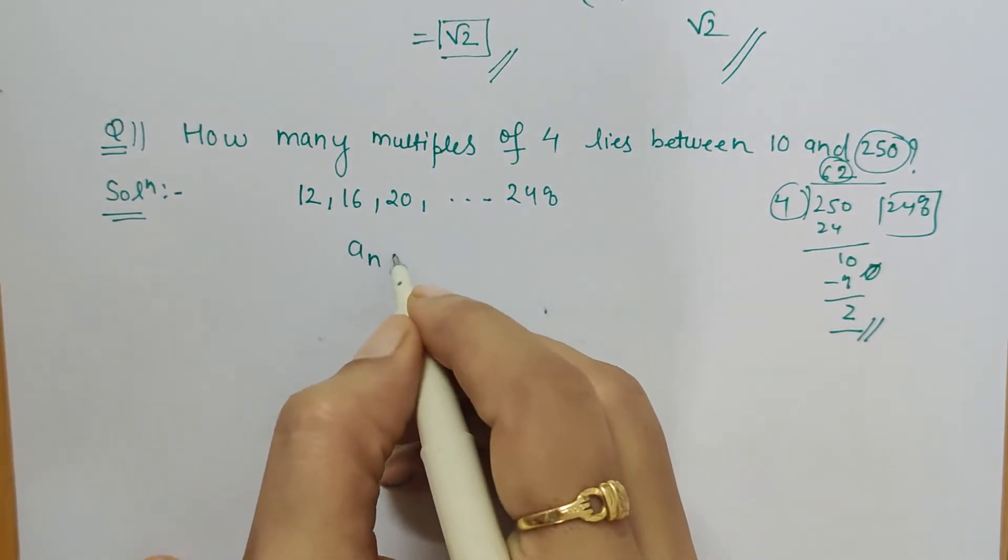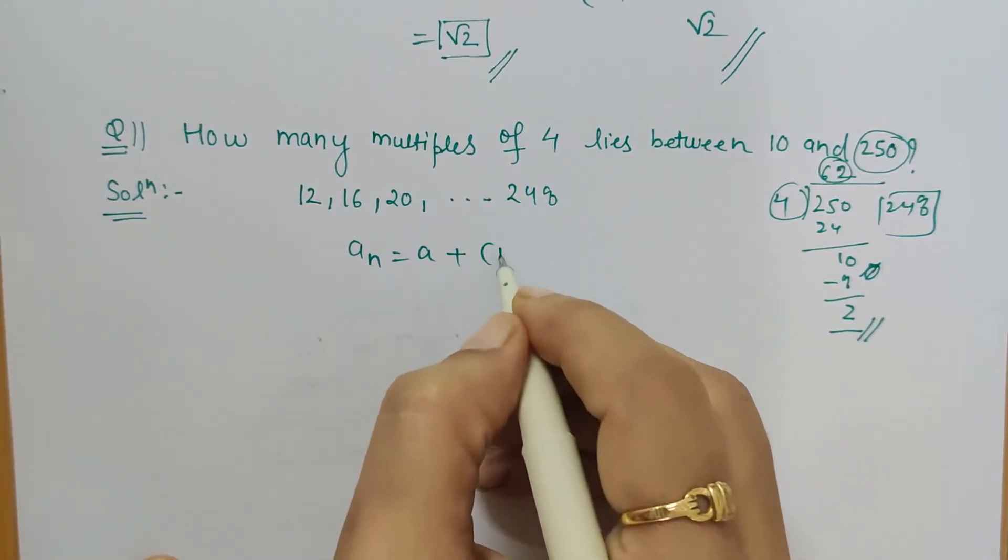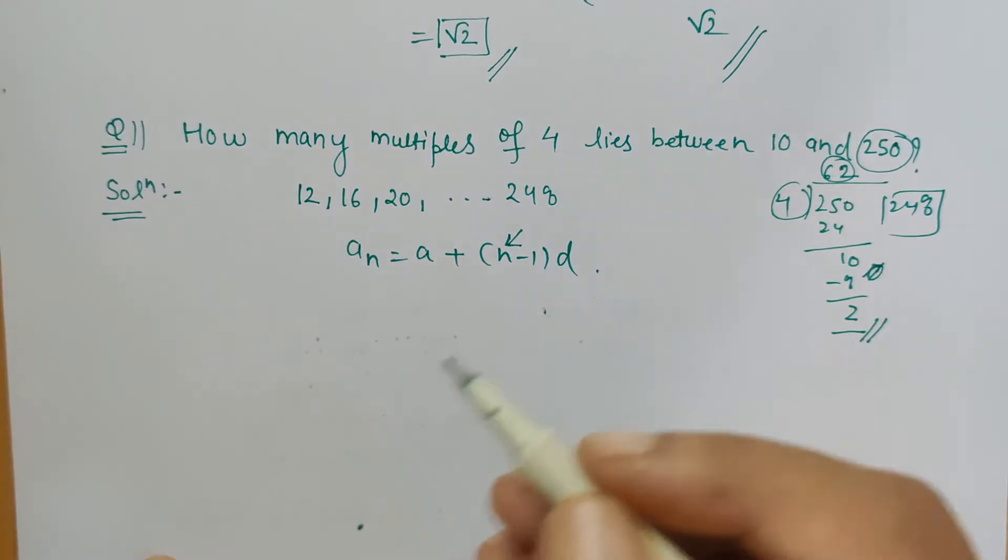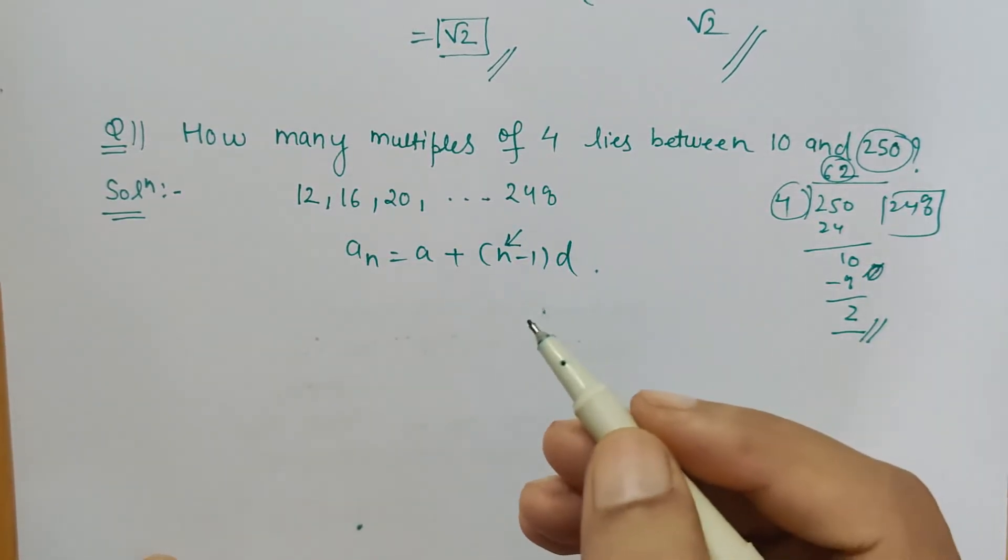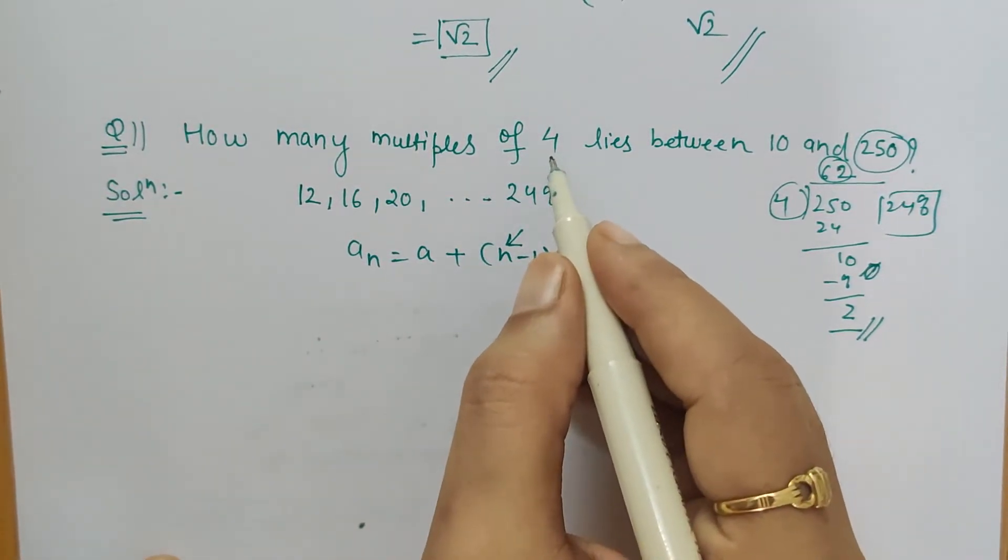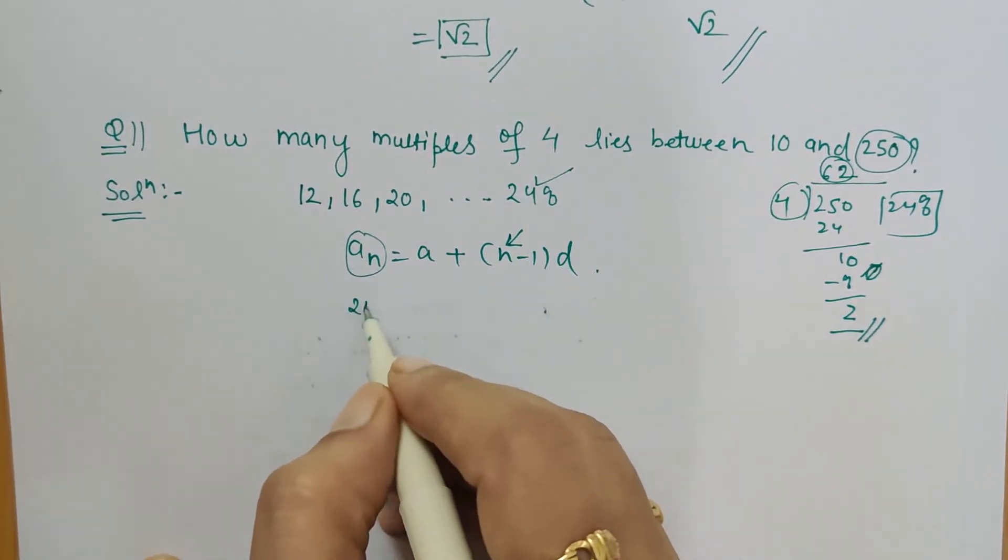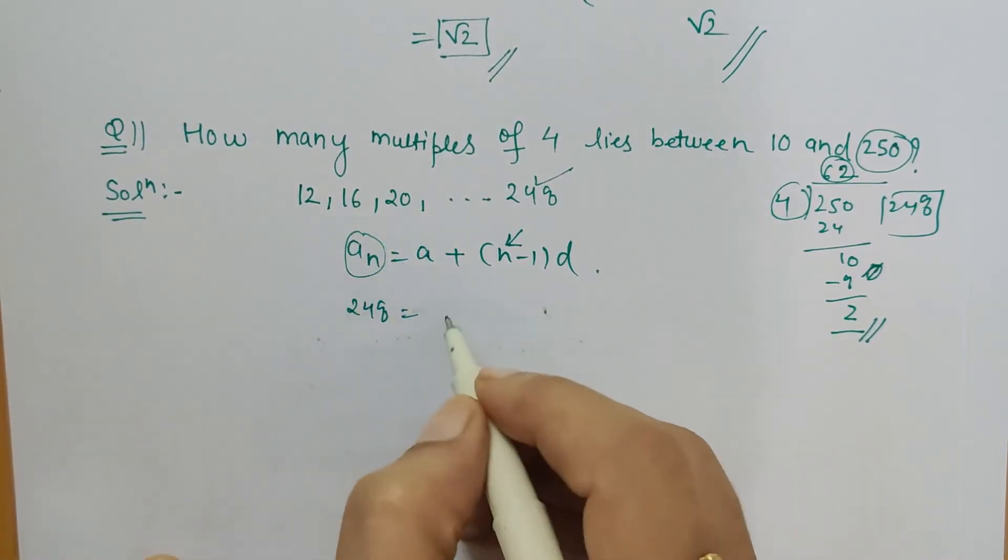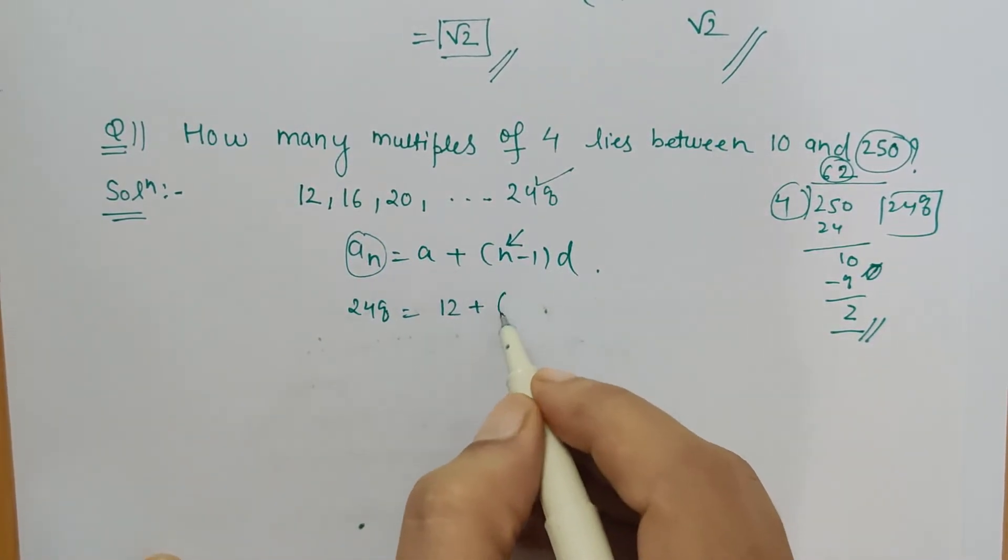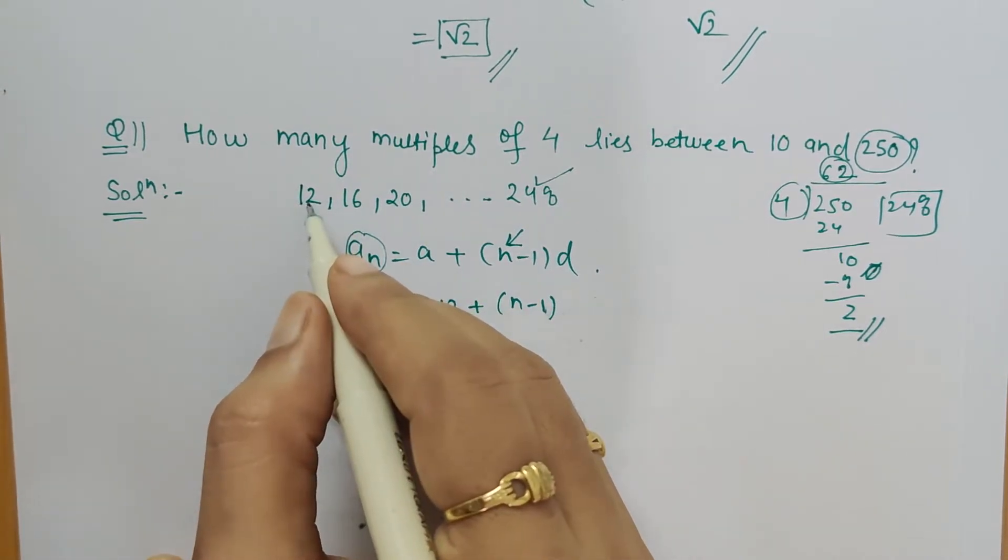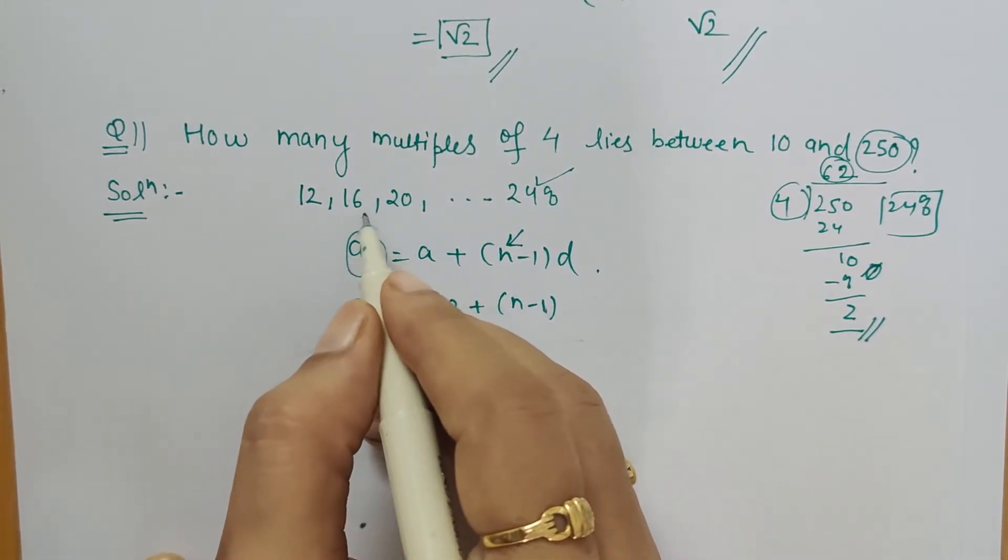For that, we have a formula: a_n equals a plus (n minus 1) times d. Here we are talking about n, the number of multiples, the number of such numbers which are divisible by 4 between 10 and 250. Here, a_n is the last term, which is 248, so write 248. a is the first term, which is 12. n we have to find, and common difference is 16 minus 12, which is 4, or 20 minus 16, which is 4.